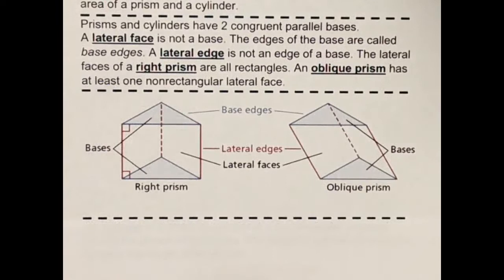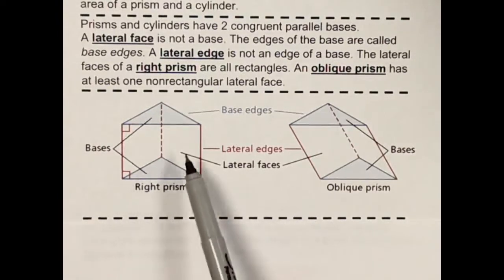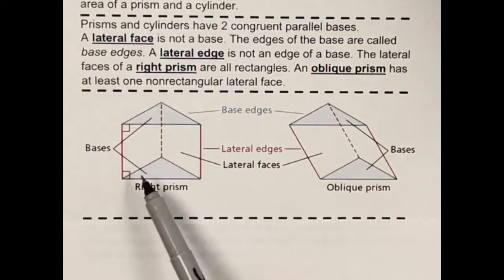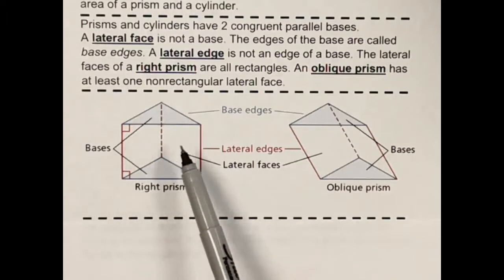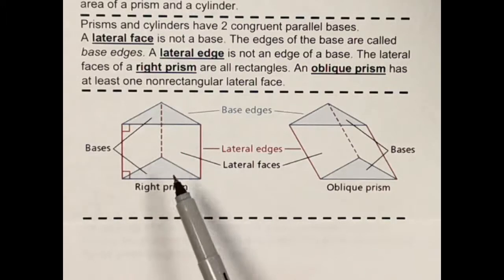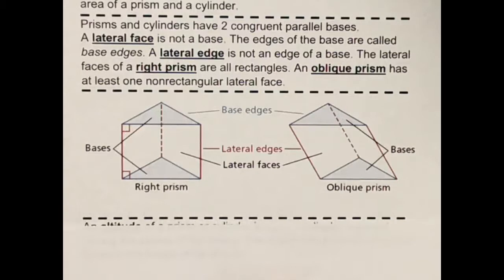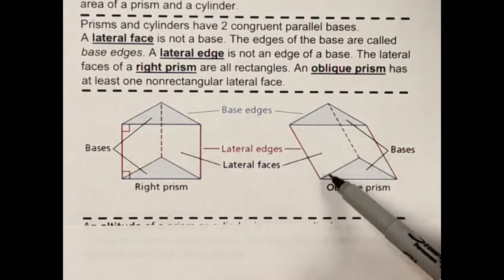So here's kind of what we're talking about. These would be my bases, and these rectangles along this prism would be faces, not bases. This would be kind of what an oblique prism looks like — these angles right here are not 90 degrees.